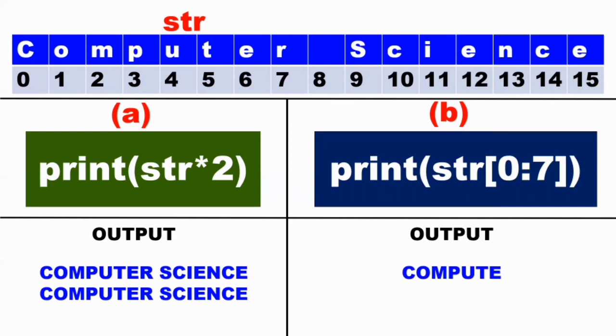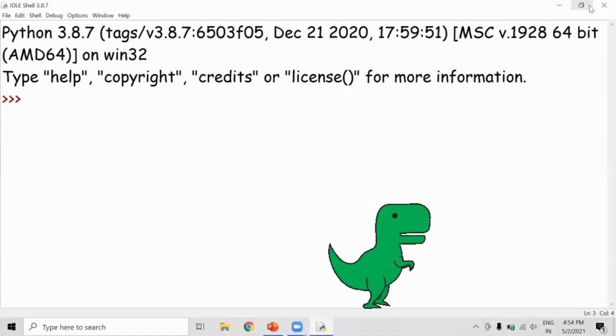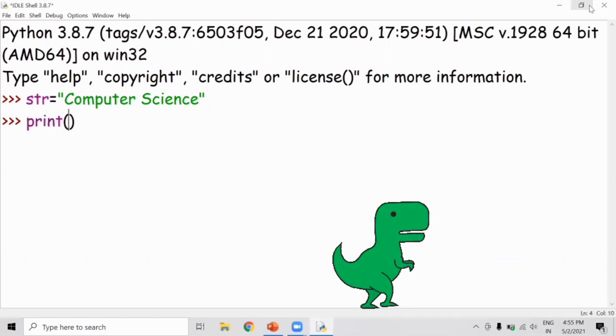Now we will work it out in Python IDLE. STR is equal to computer science, C-O-M-P-U-T-E-R-S-C-I-E-N-C-E. Enter that row.